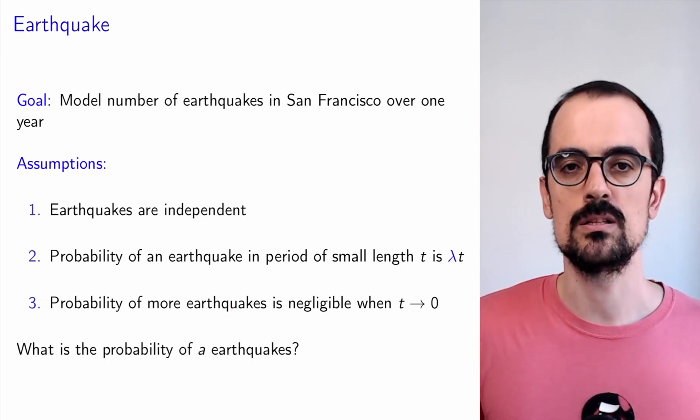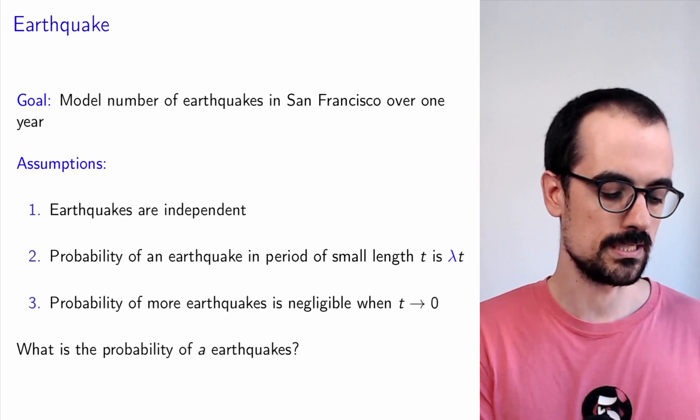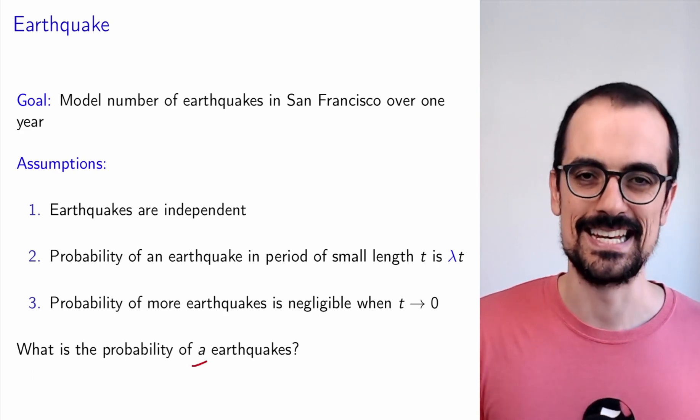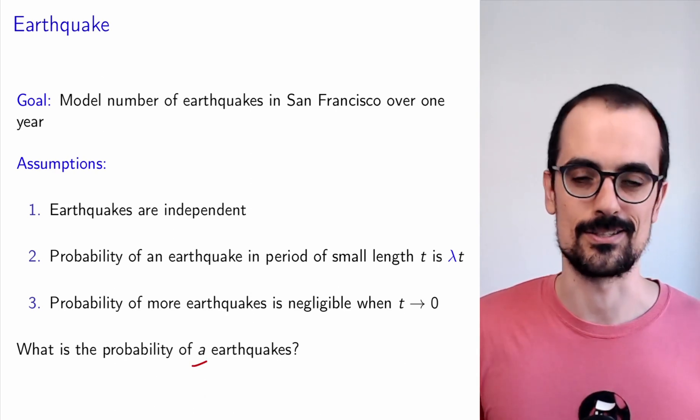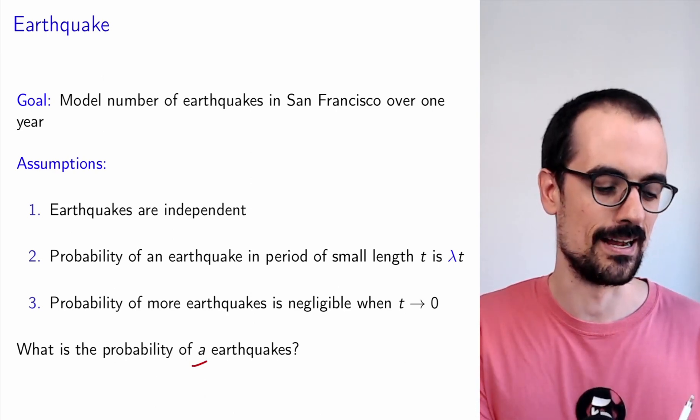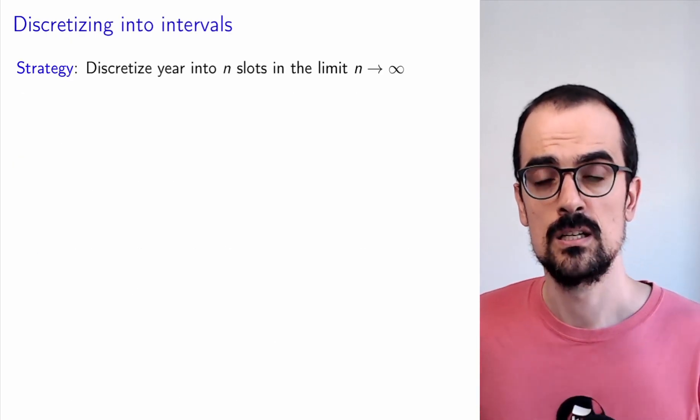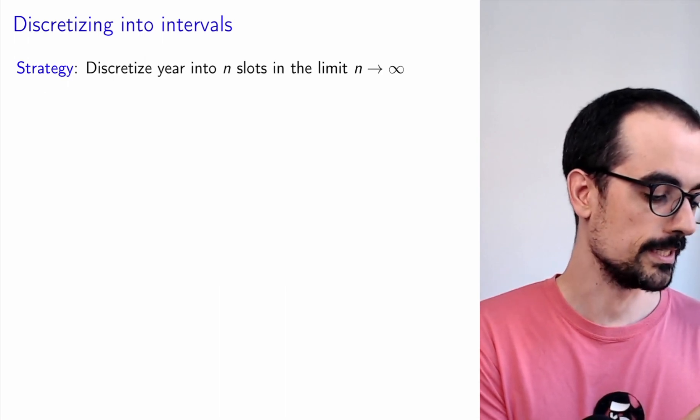Hopefully the assumptions make sense. Now let's derive a parametric model based on these assumptions. So the question is, under these assumptions, what is the probability of seeing A earthquakes? Our strategy is going to be the following. We're going to take this year that we're interested in.